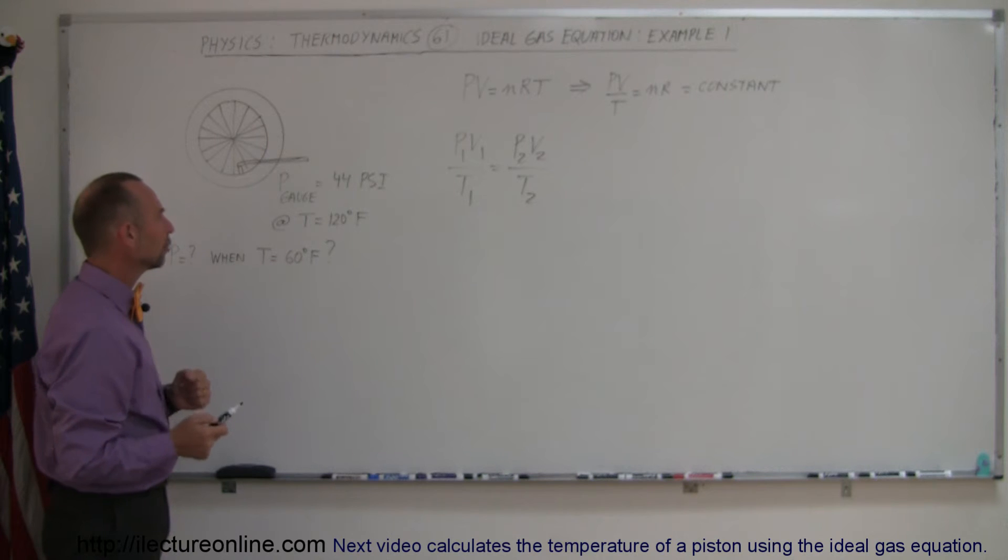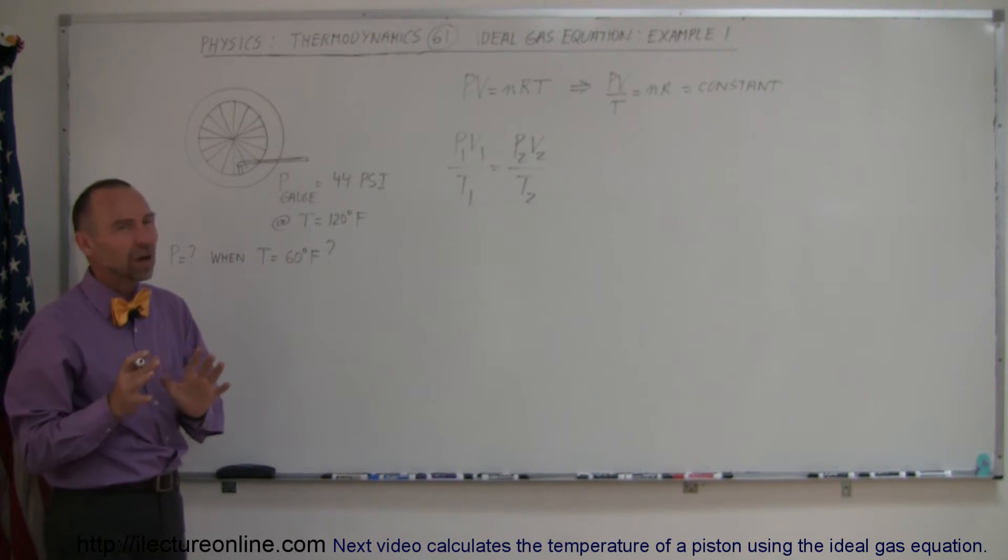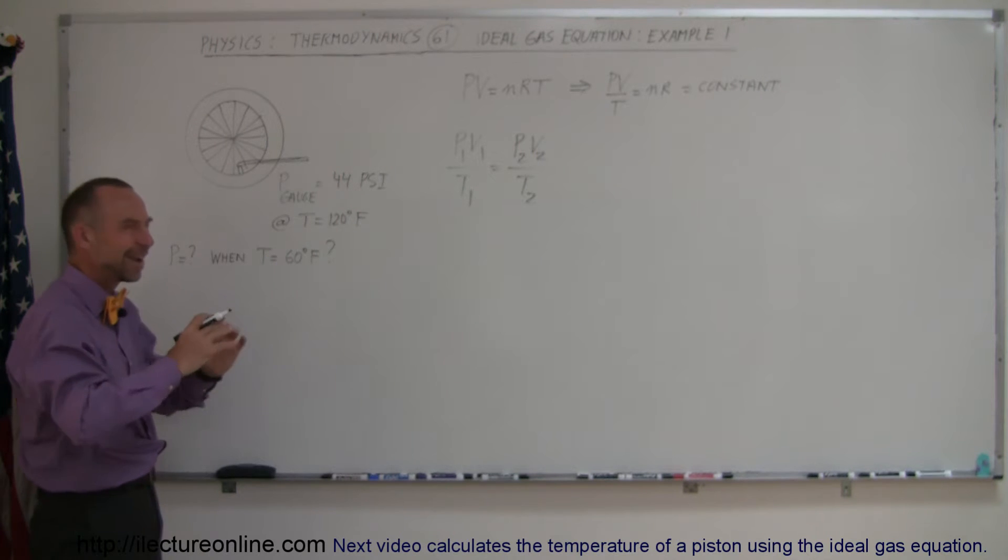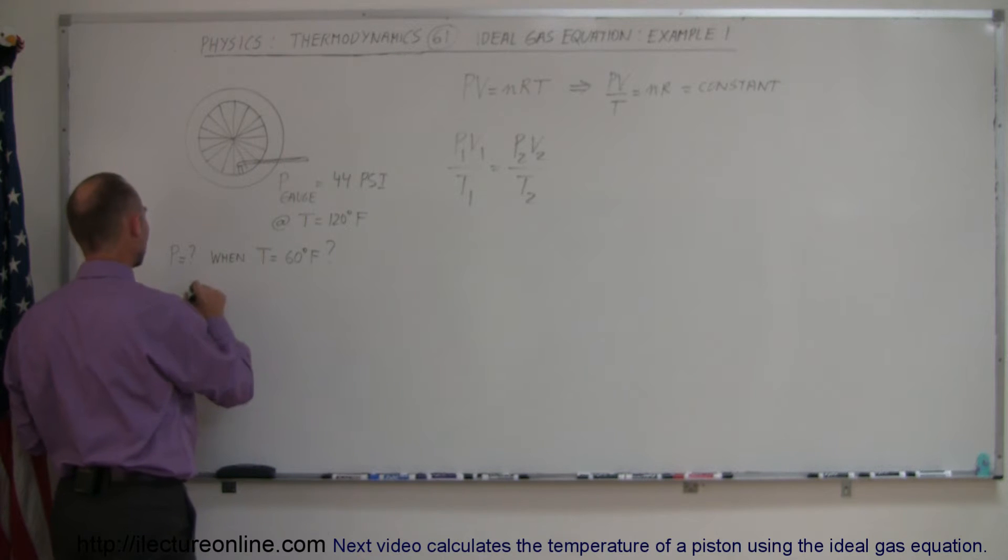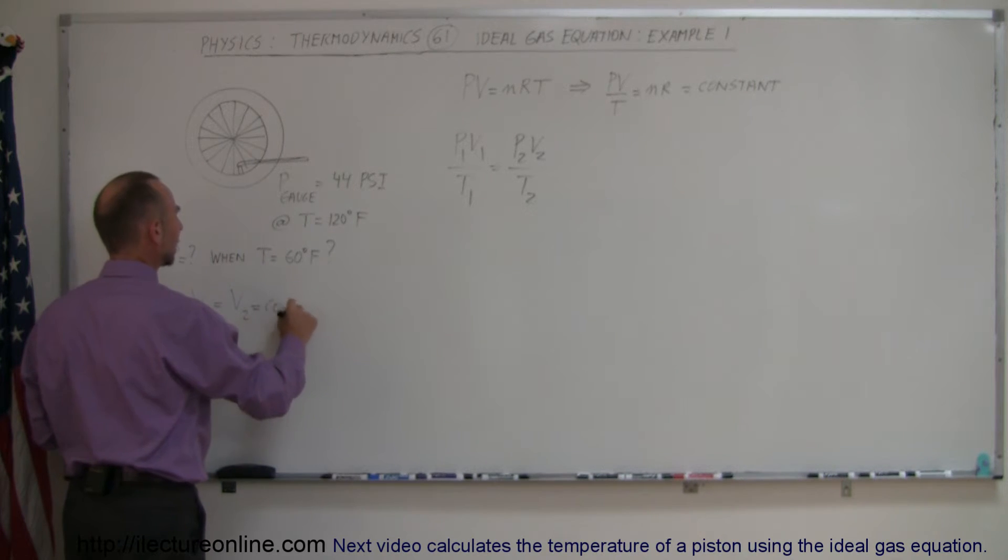Plugging that into our problem and realizing that the volume in this case remains constant, which is pretty well true in a tire. A tire doesn't expand very much when the pressure increases, the temperature increases, we can say that V1 is approximately equal to V2, which is equal to a constant.